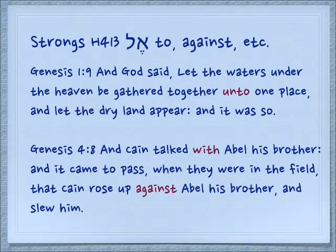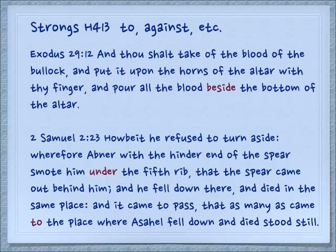It can mean 'to,' like in the direction of a place. Genesis 1:9 — 'And God said, let the waters under the heaven be gathered together unto one place. Let the dry land appear. And it was so.' Here we have two examples in Genesis 4:8 — 'And Cain talked with Abel, or to Abel, his brother, and it came to pass when they were in the field, that Cain rose up against Abel — the same preposition El — his brother, and slew him.' Exodus 29:12 — 'And thou shalt take of the blood of the bullock and put it upon the horns of the altar with thy finger, and pour all the blood beside the bottom of the altar.' Same preposition El.